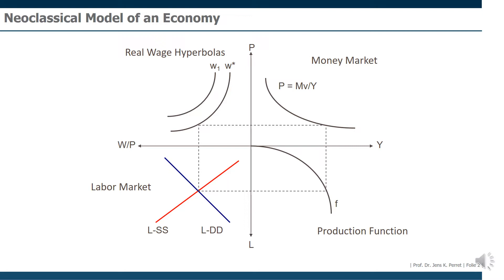We can start in the upper right with the money market. The money market in the easiest version described via the quantity equation, which then would link GDP on the one hand and the price level on the other hand, if we slightly solve this. And they will be in a negative relation.